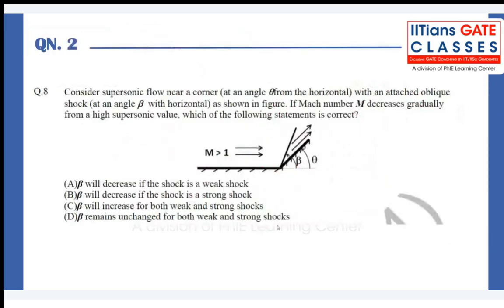Let us move to the next question. Consider a supersonic flow near a corner at angle theta from the horizontal, with an attached oblique shock at angle beta. If the Mach number M decreases gradually from a high supersonic value, which statement is correct? Options: A — beta decreases if weak shock; B — beta decreases if strong shock; C — beta increases for both; D — beta unchanged for both. This is a classic theta-beta-M relation question.